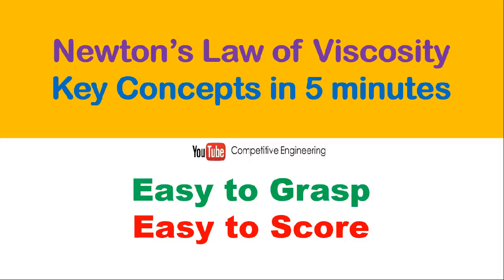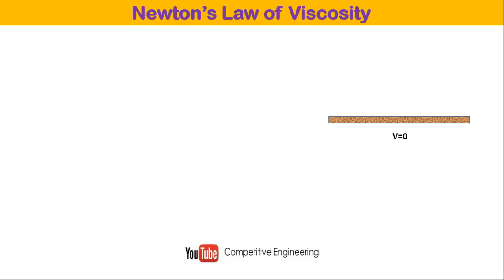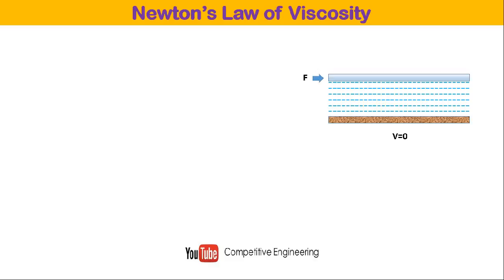Newton's law of viscosity: consider a flat plate which is stationary — the velocity of the flat plate is zero. A fluid layer is flowing above the flat plate, and a force F is applied to move an upper flat plate. Using a coordinate system X and Y, this gives the velocity profile: at the point of contact between the fluid and the stationary flat plate the velocity is zero, and moving upward the velocity increases until it equals the upstream velocity of the fluid.